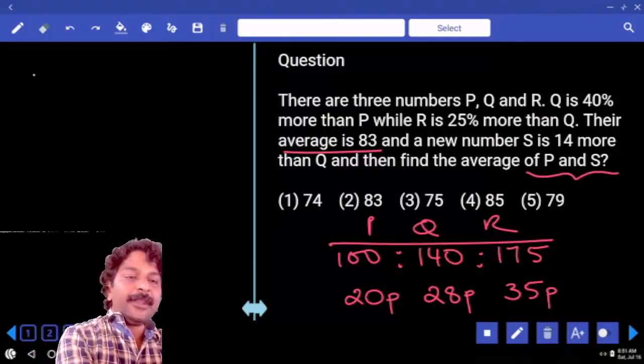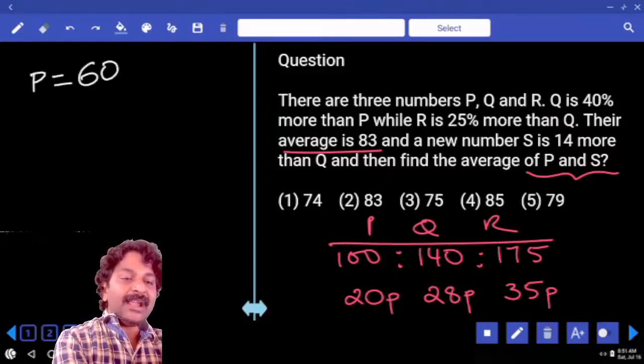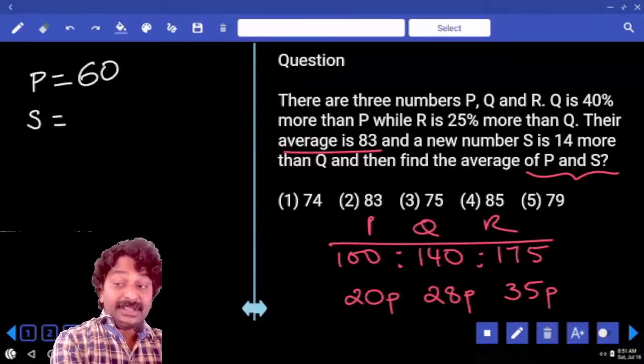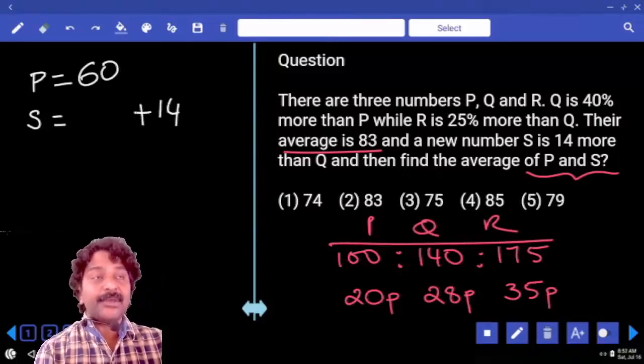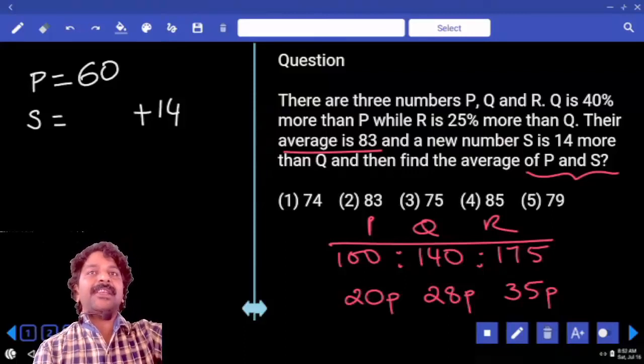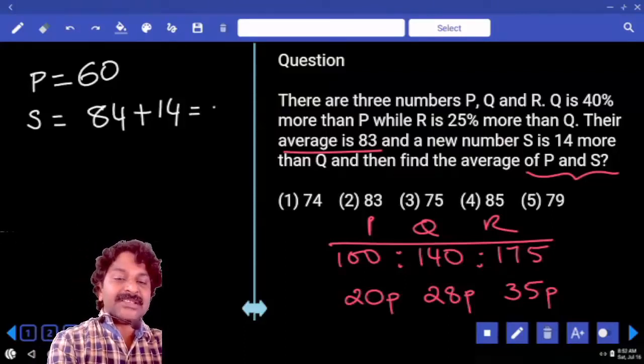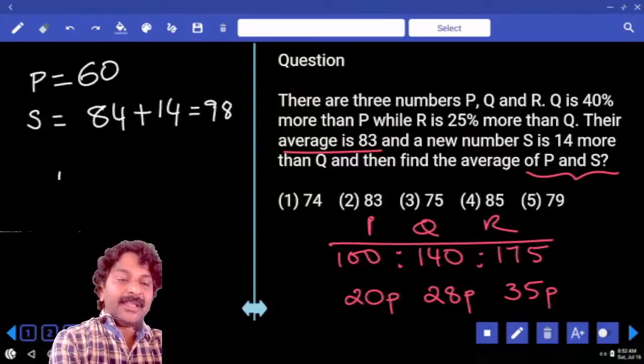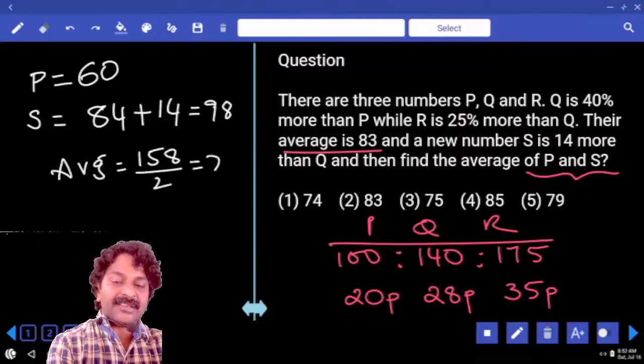And now finally we need average for P and S, where P is equal to 20 parts, 20 into 3, 60. And now we need S value, which is 14 more than Q. What is Q? 28 parts. 28 three times? 84. So that means S is equal to 98. Then average of these two numbers is equal to 158 by 2, which is 79.